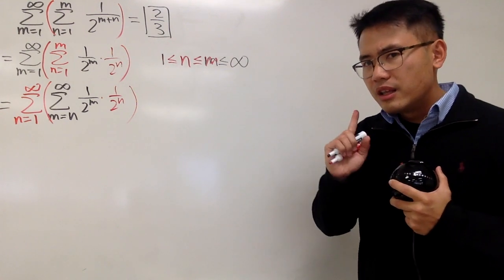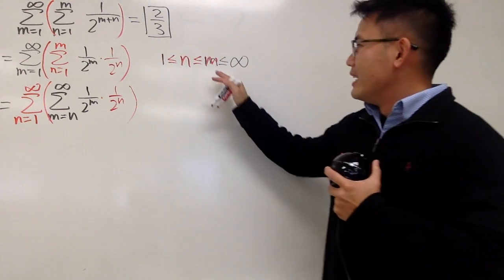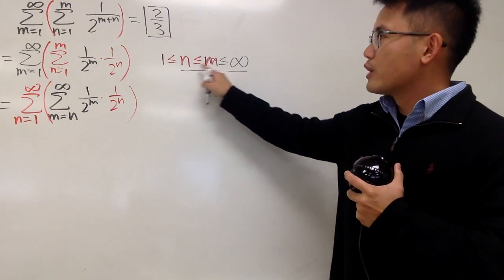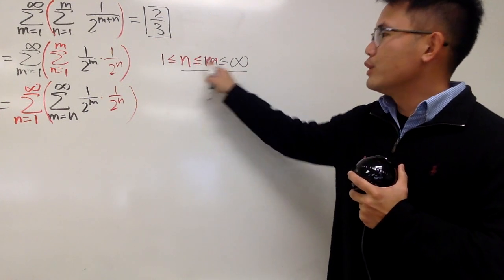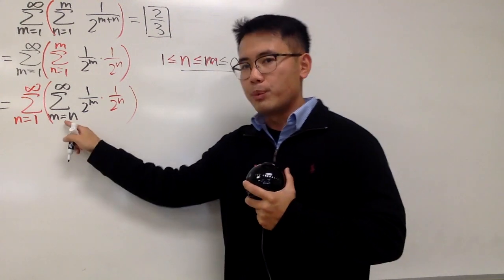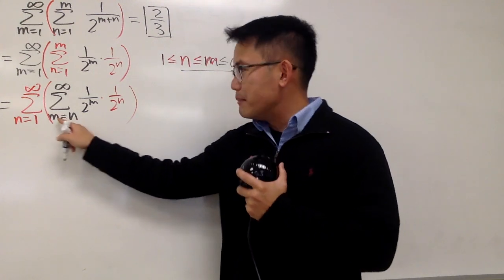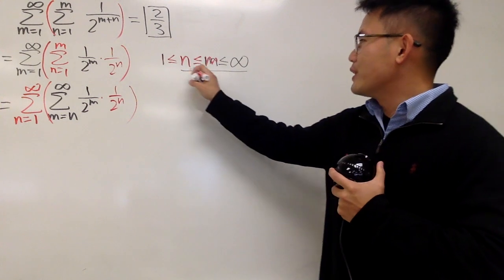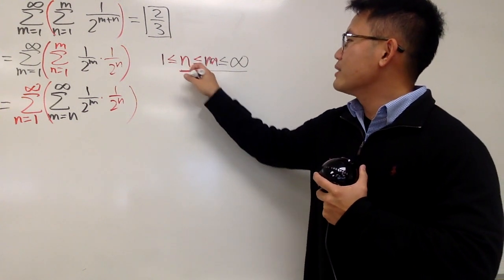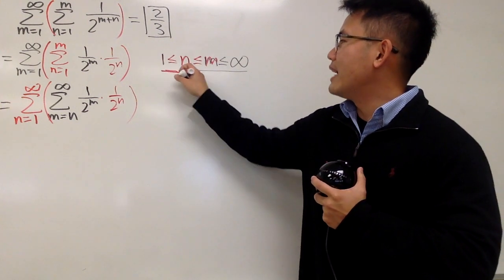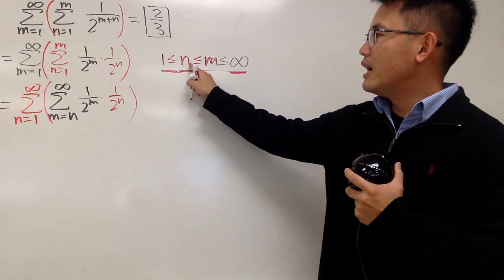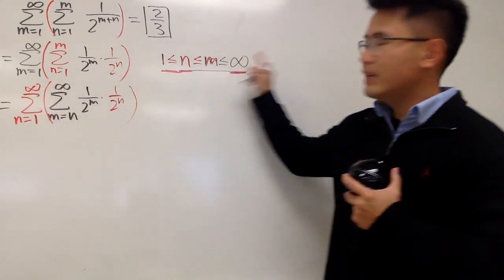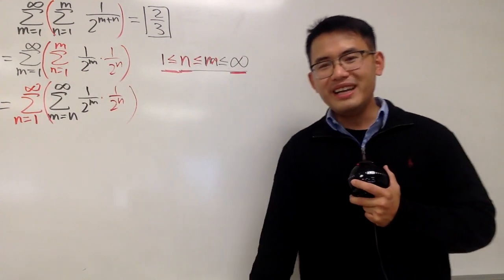That's very nice. Now if you look at it from the other perspective, m goes from n to infinity — that's exactly what we put down. And then for the n part, n goes from 1 to infinity. That's pretty much it.